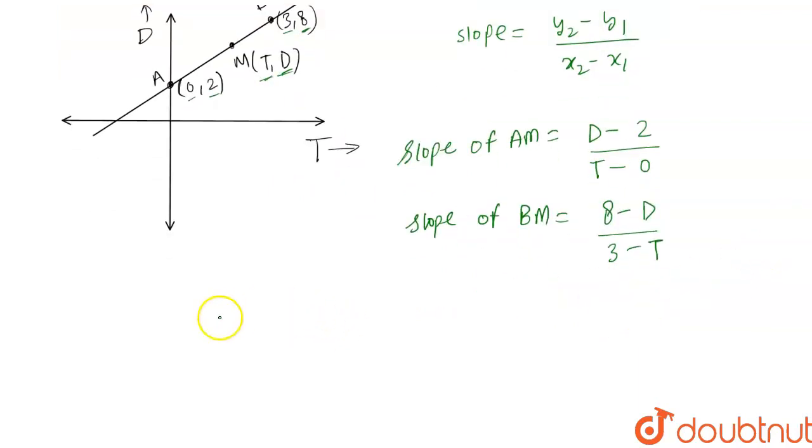We know that slope of AM equals slope of BM. So now put them equal. We get (d - 2)/(t - 0) = (8 - d)/(3 - t).